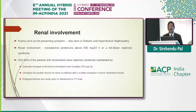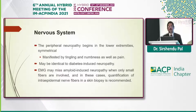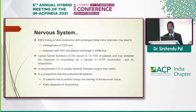Renal involvement: unlike in diabetics, there may be non-selective proteinuria. One third of amyloidosis patients have nephrotic syndrome, reflected by a dramatic increase in blood cholesterol. Urine analysis for protein should be done in patients with a sudden increase in serum cholesterol. Enlarged kidneys are typical but rarely seen. Nervous system involvement usually starts with peripheral neuropathy in the lower extremities — symmetrical, mimicking diabetic neuropathy. EMG may miss amyloid-induced neuropathy when only small fibers are involved; in these cases, skin biopsy for quantification is used. EMG findings of prolonged distal motor latencies may lead to misdiagnosis as CIDP. Carpal tunnel syndrome is found in 10 to 15 percent of patients.